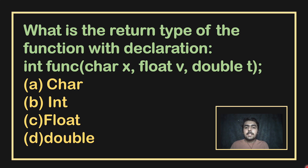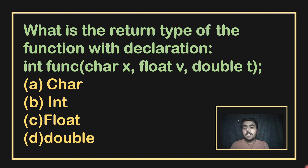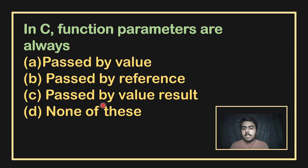What is the return type of a function with this declaration: int function with arguments character x, float v, and double t? The return type is always what is written before the function name. Here, int is written before the function name, so the answer is integer.